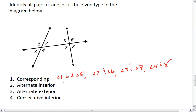Alternate interior angles, we have angle 2 and angle 7, as well as angle 4 and angle 5.